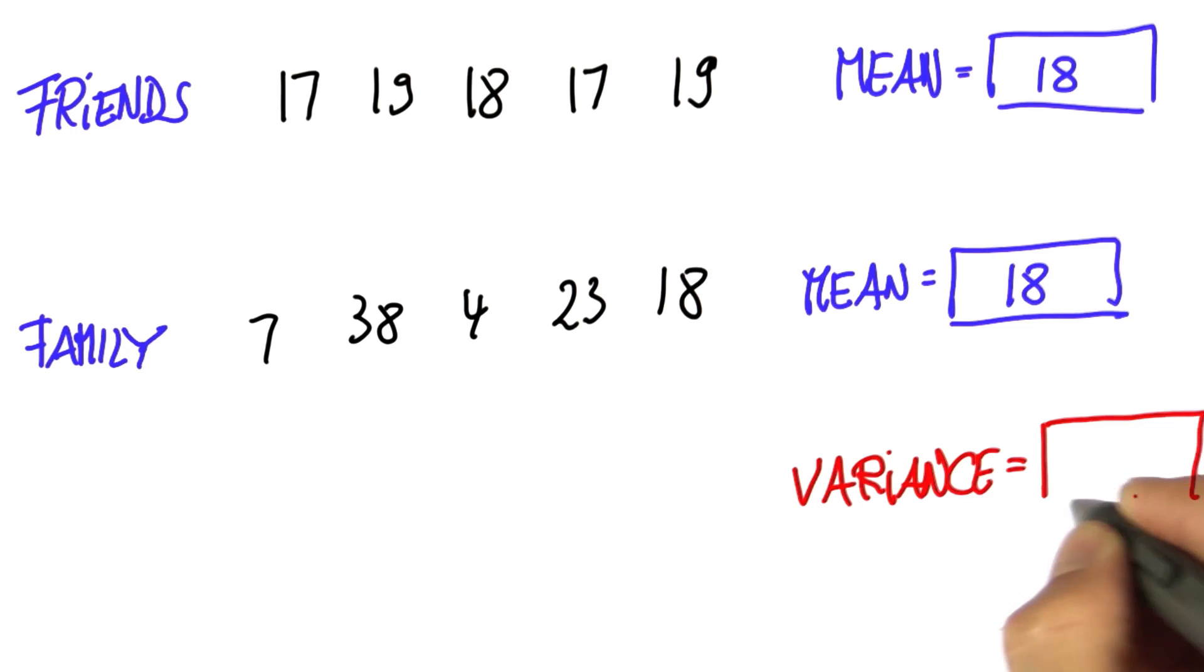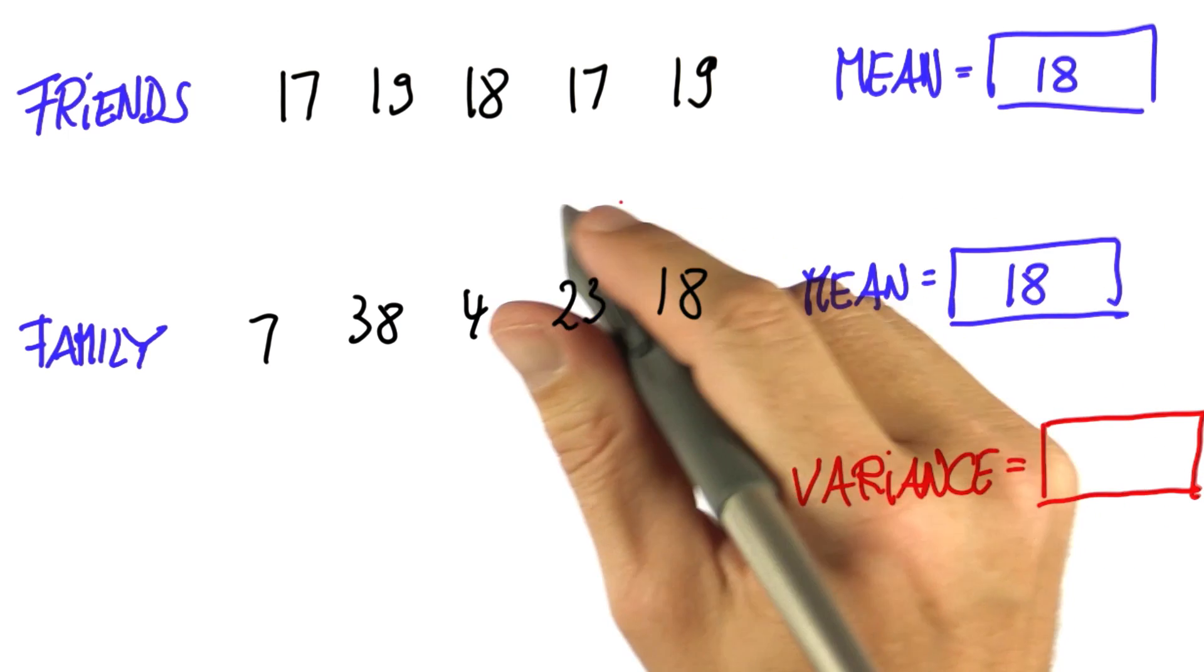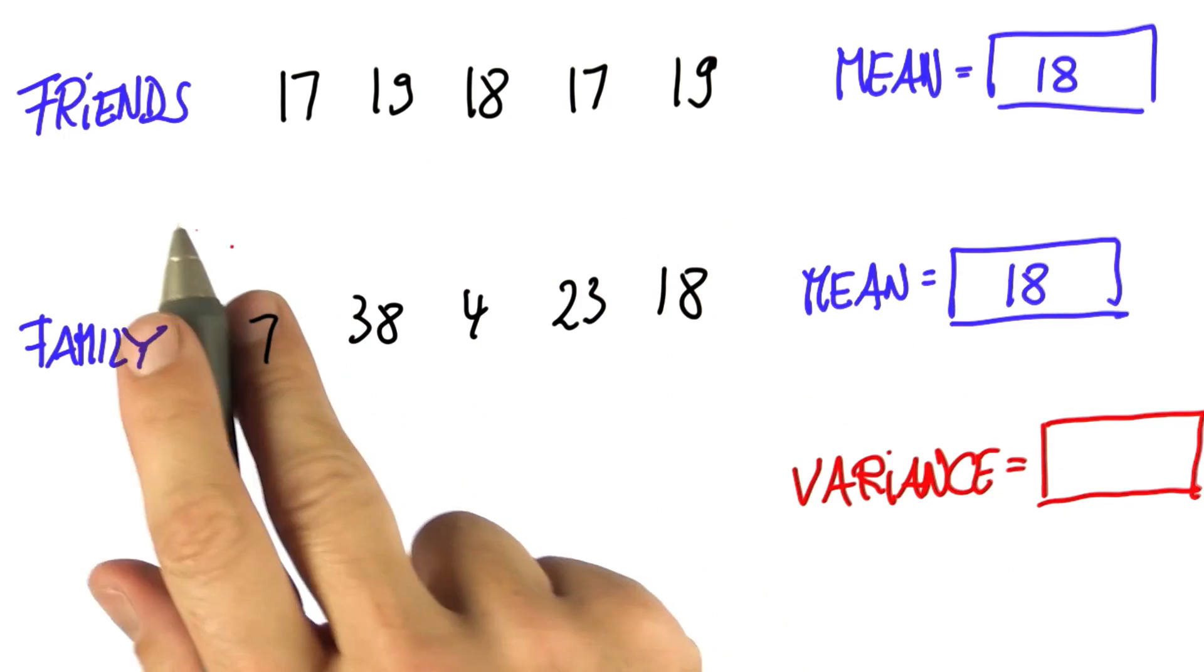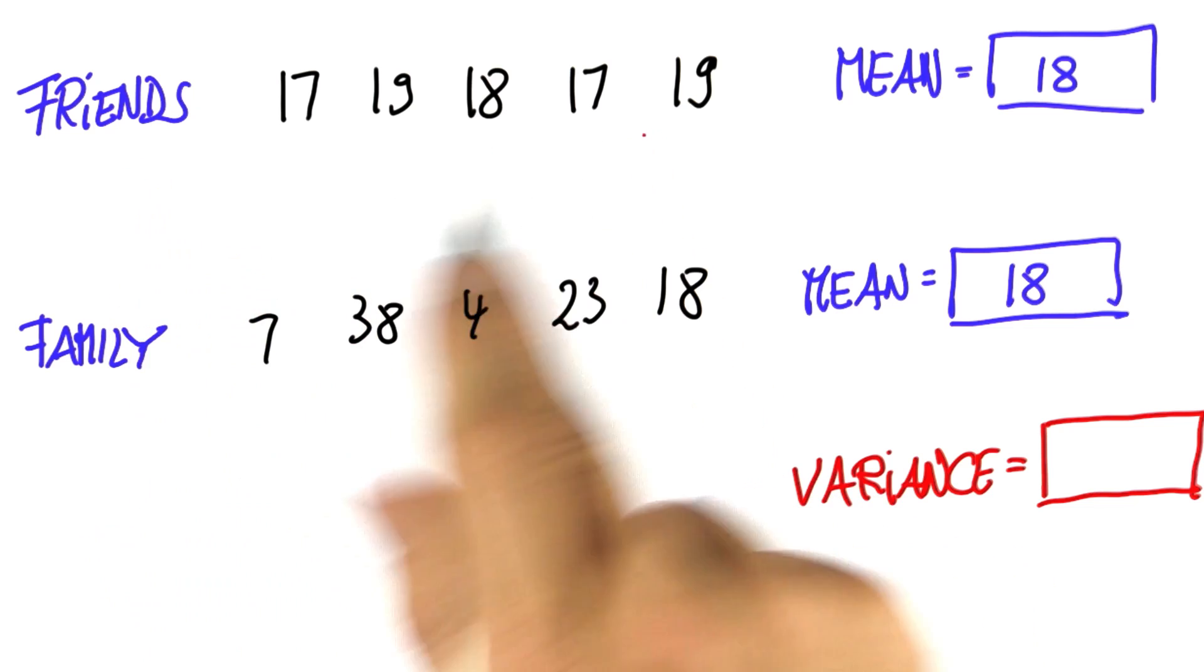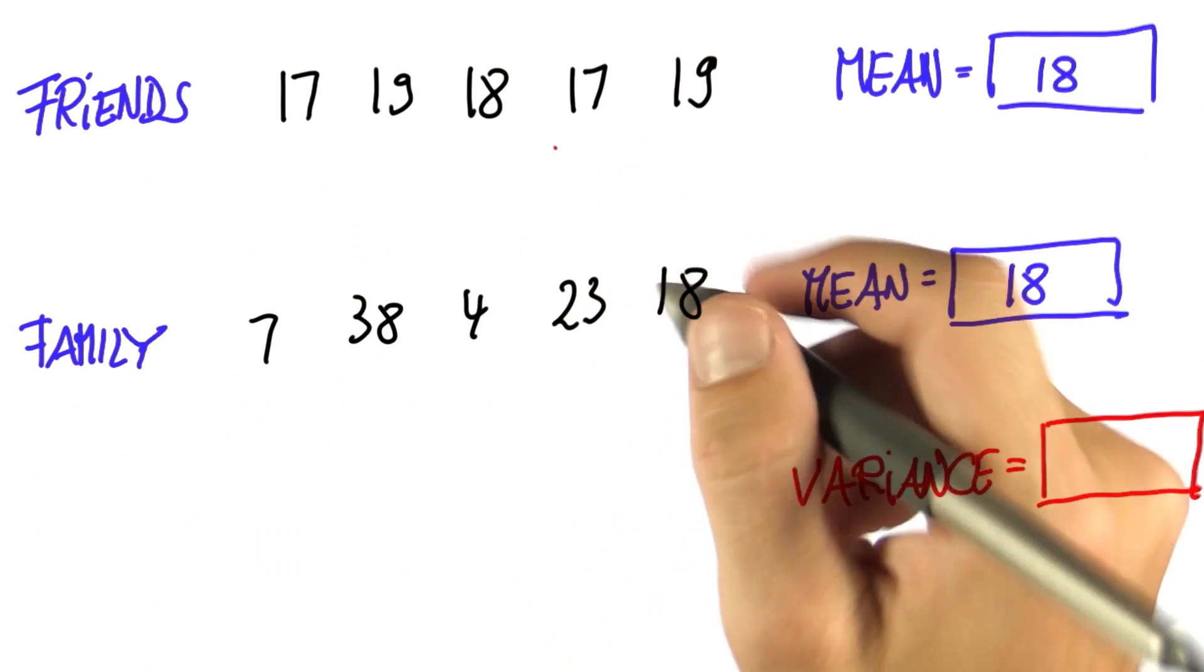So now we'll compute the variance of the data. And the very first trick we apply is we normalize these sequences by subtracting the mean from each data item.